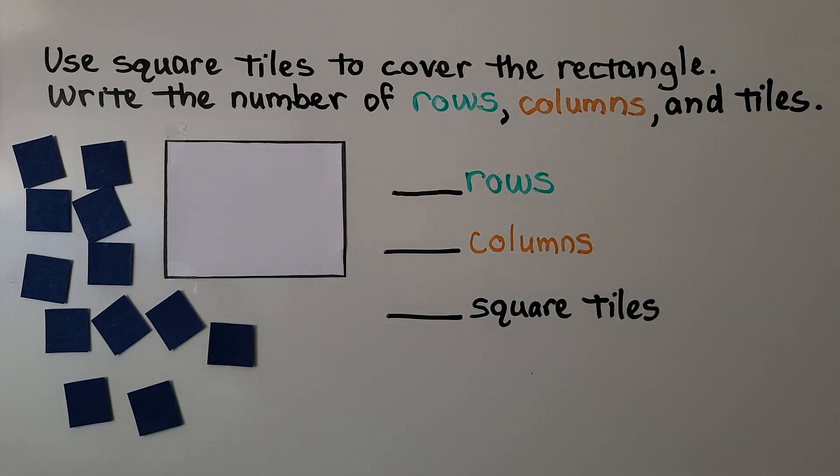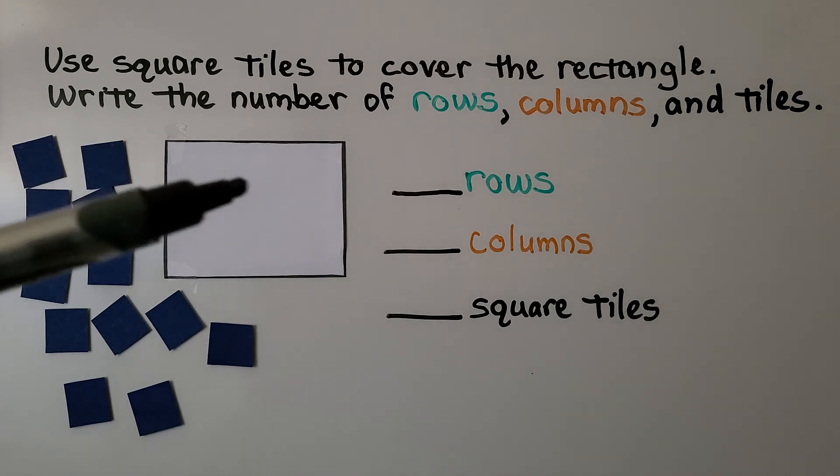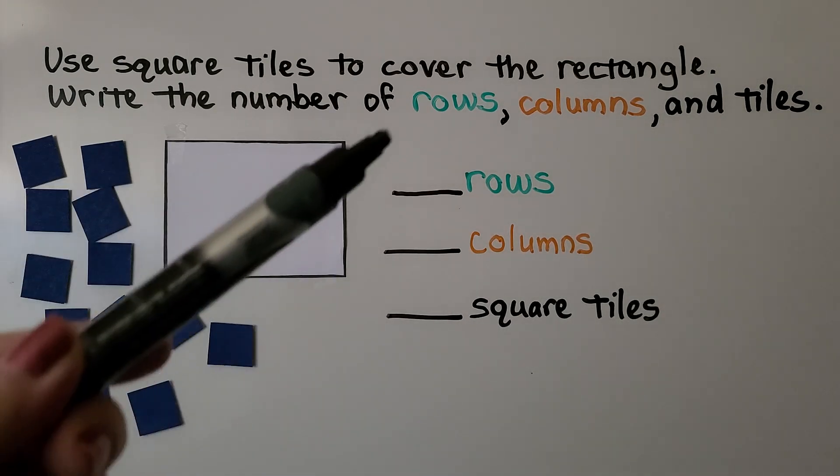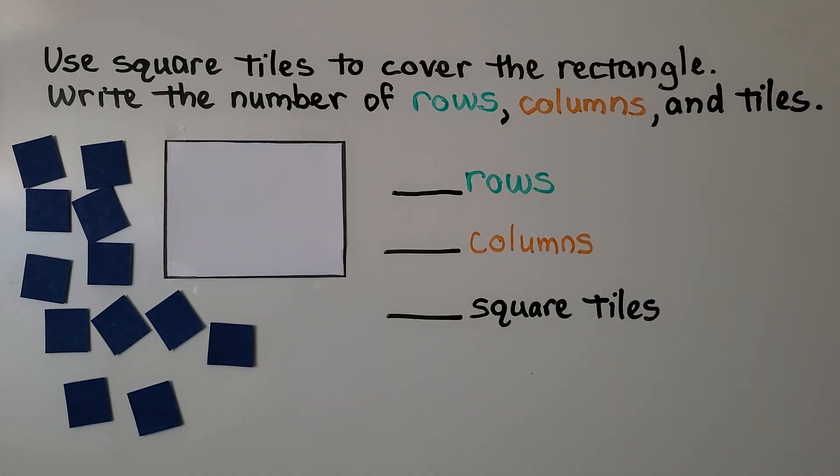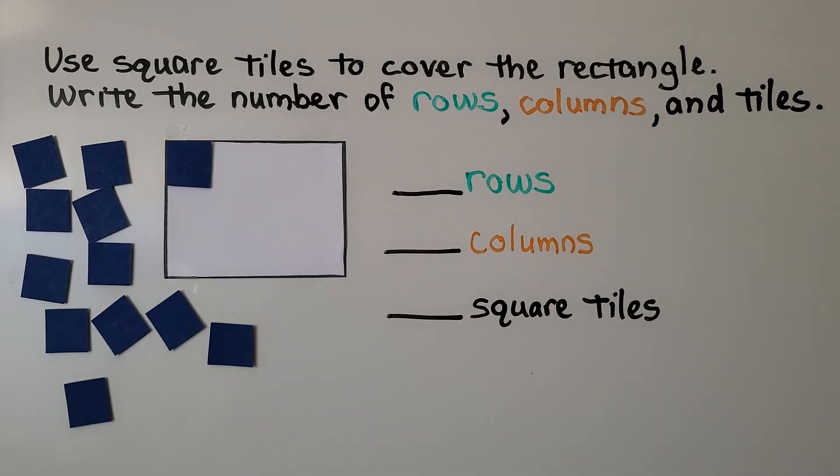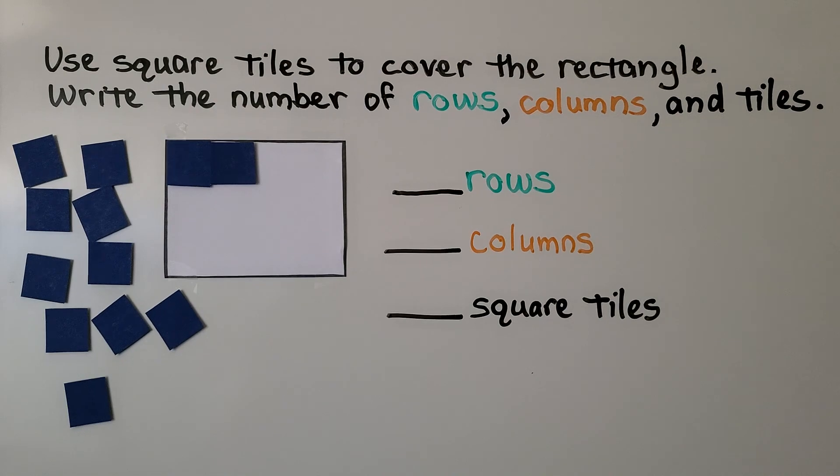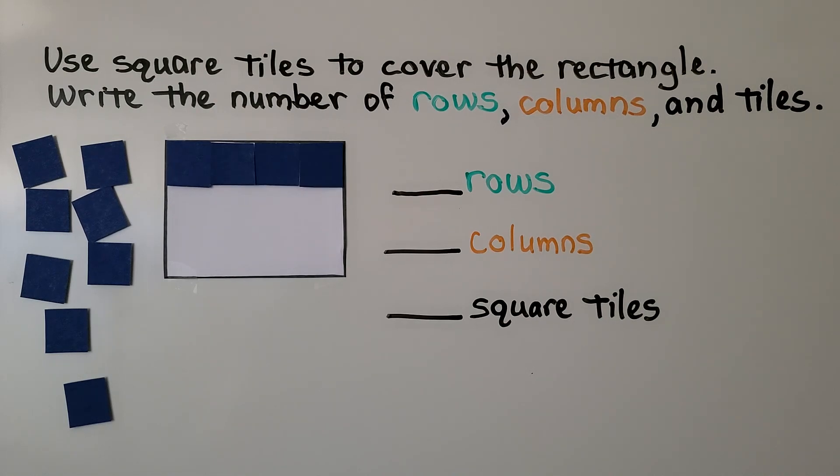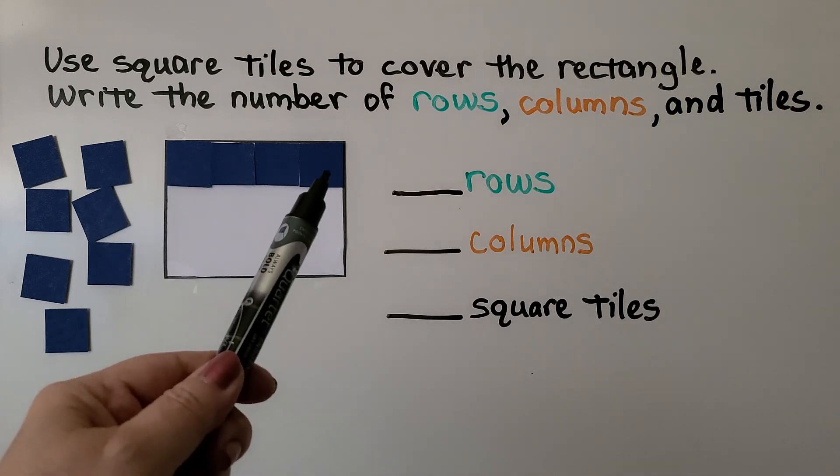Here it's telling us to use square tiles to cover the rectangle. Then write the number of rows, columns, and tiles. We start by putting a tile in the corner up here. Then we put another one. And we do it for the whole row. I was able to fit four square tiles in this row.